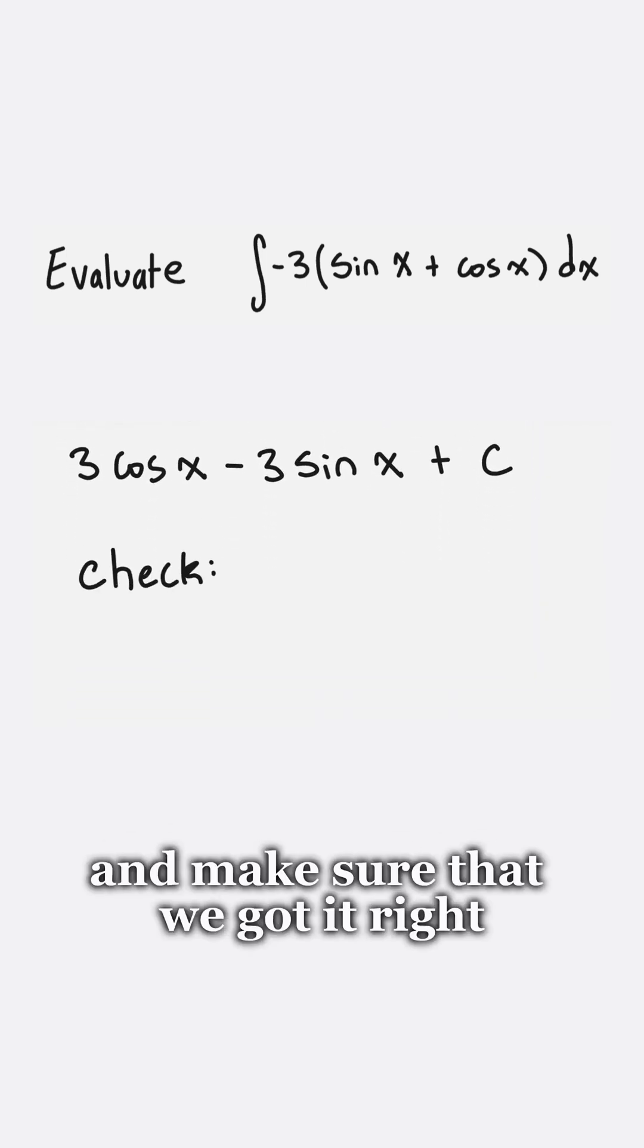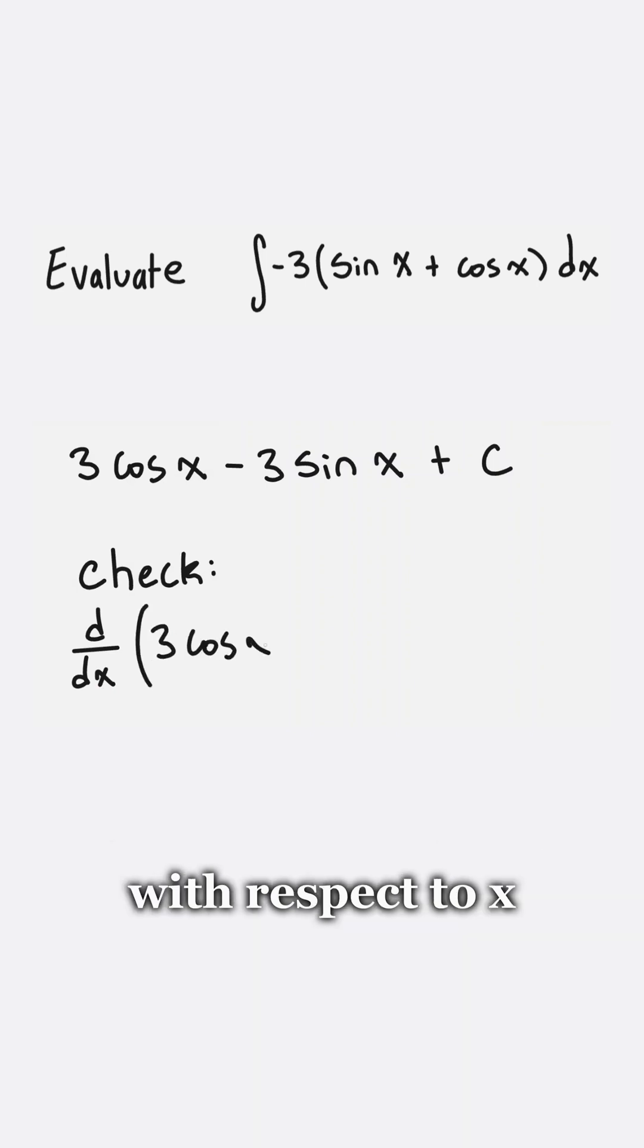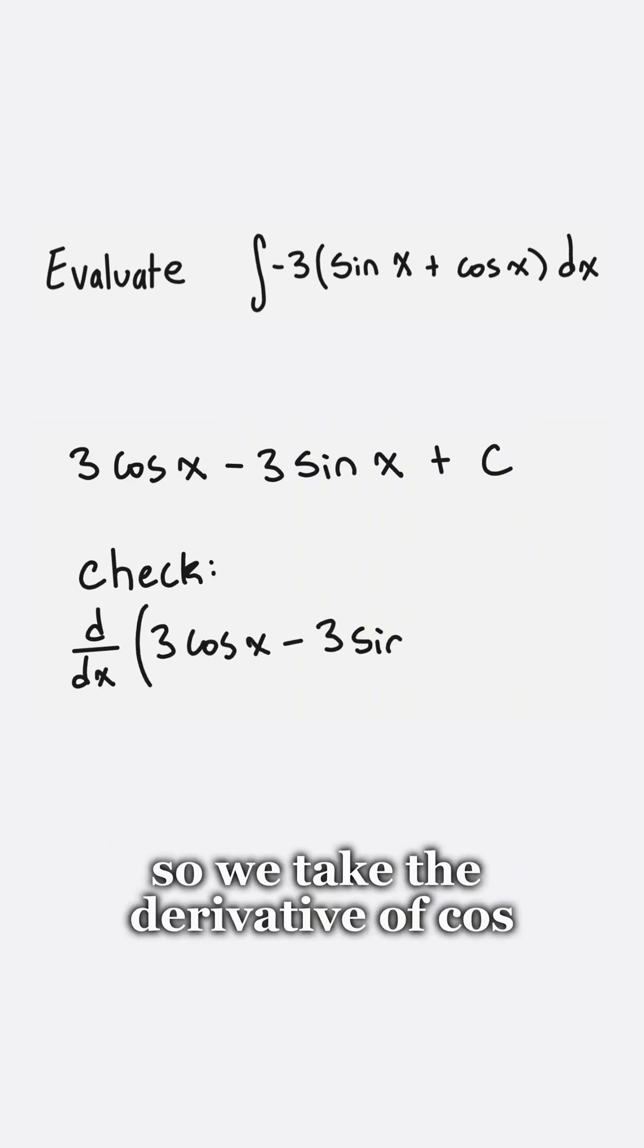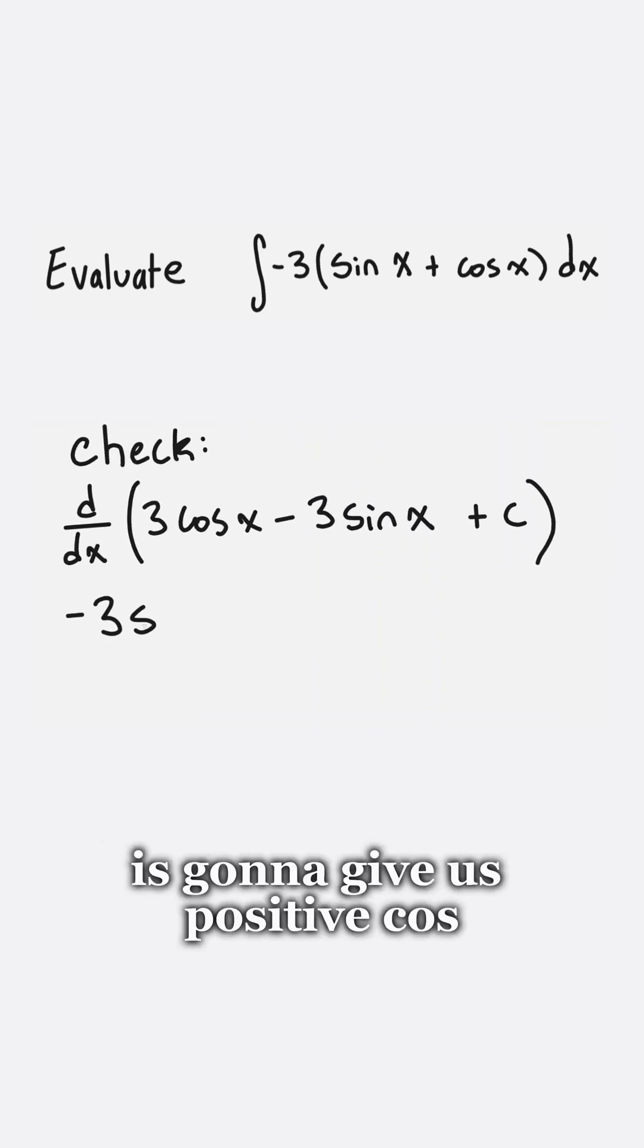Now if we want to check this and make sure that we got it right, we just need to take the derivative of our answer with respect to x. So if we take the derivative of cos, that's going to give us negative sine, and the derivative of sine is going to give us positive cos.